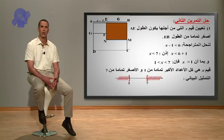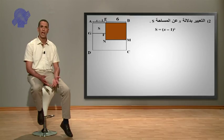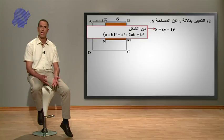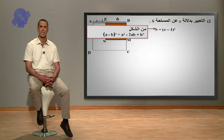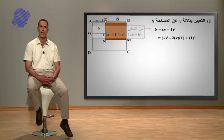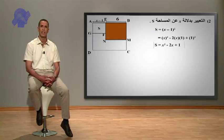ثانياً التعبير بدلالة x عن المساحة S: مساحة مربع هي طول الضلع في نفسه، ومنه S تساوي (x ناقص 1) الكل مربع، وهي من الشكل (A ناقص B) الكل مربع والتي تساوي A مربع ناقص 2AB زائد B مربع. بتطبيق المطابقة الشهيرة نتحصل على S تساوي x مربع ناقص 2x في 1 زائد 1 مربع، بعد التبسيط نجد أن S تساوي x مربع ناقص 2x زائد 1.